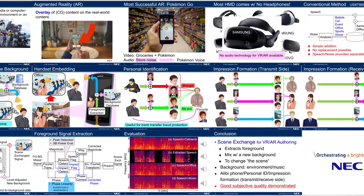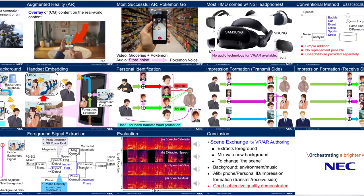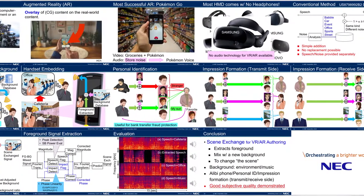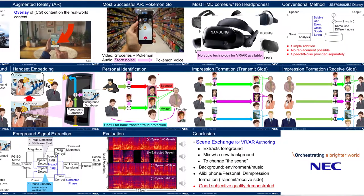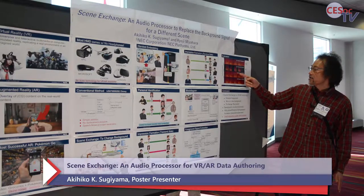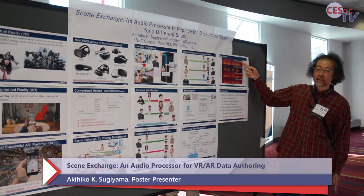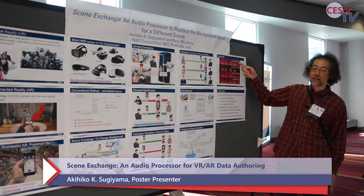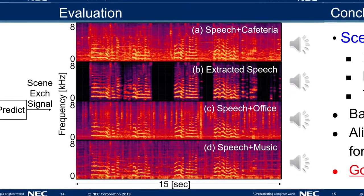These are the results. This is the input signal with the speech and cafeteria noise, the extracted speech after processing, and speech plus office noise — which is different from the cafeteria noise — as the replaced background signal.